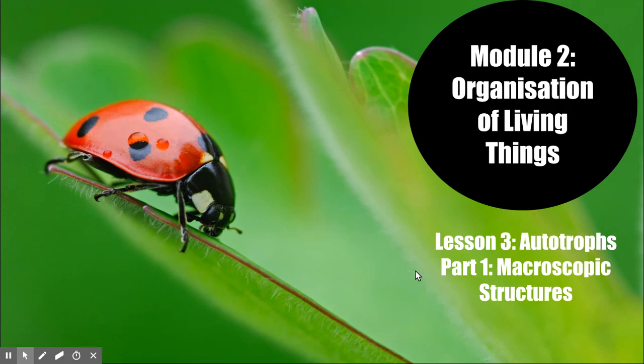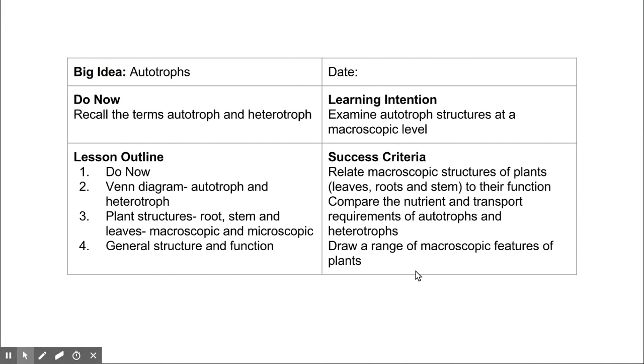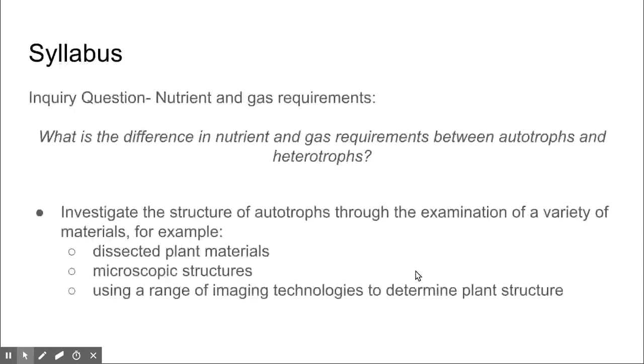Welcome to Lesson 3 of Module 2, The Organisation of Living Things. This is Part 1 of a three-part series on autotrophs. In this video, we're looking at structures at a macroscopic level, those which we can see unaided with the naked eye.